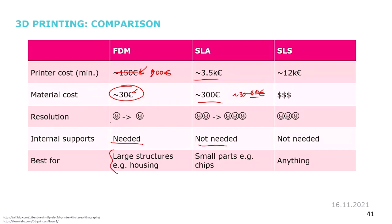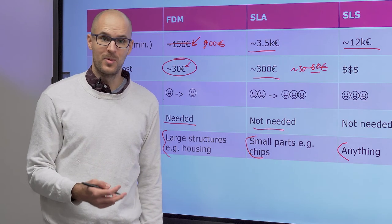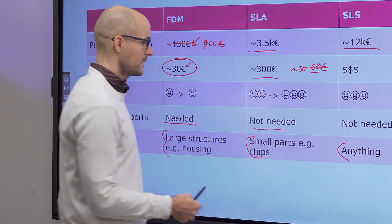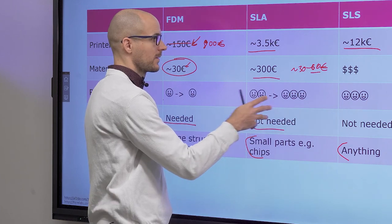For SLS, the material cost is not really available in any catalog — you need to buy it from the manufacturer. The machine itself costs around 12,000 euros for one professional machine, and you can print basically anything with it. However, beware that microfluidic chips will be porous and therefore will not be watertight. The resolution is excellent with SLS.